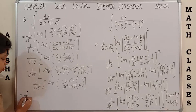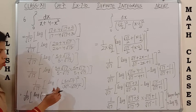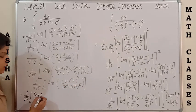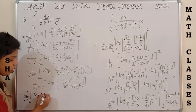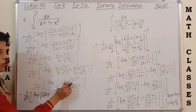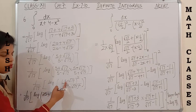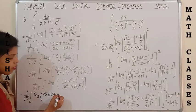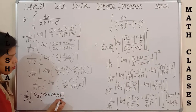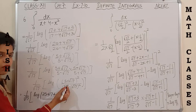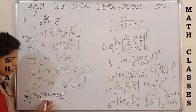So it becomes (1/√17) × log of: in the numerator, (a + b)² = a² + b² + 2ab = 5² + (√17)² + 2×5×√17 = 25 + 17 + 10√17. In the denominator, a² - b² = 5² - (√17)² = 25 - 17 = 8.